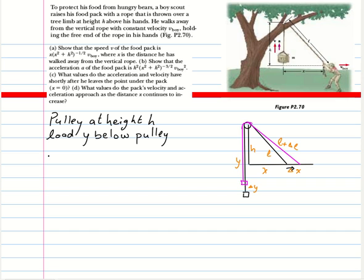What we know is v = dy/dt, and this is what we have to find. Now, I want you to think about this. At this moment, the length of the rope is l plus y. After time delta t, suppose this position is now x plus delta x.